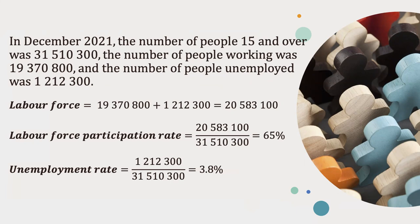Finally, the unemployment rate is found from the 1,212,300 unemployed people divided by the working age population of 31,510,300 people, giving an unemployment rate of 3.8%. I hope you enjoyed going over the concepts of labor statistics and an example of how it works. Take care.